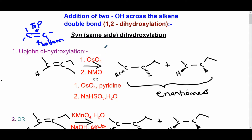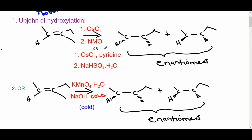There are a few reagents that can do syn dihydroxylation. The first option is osmium tetraoxide (OsO4) followed by N-methylmorpholine N-oxide (NMO) as an oxidant to regenerate OsO4 once it's used up, or OsO4 with pyridine followed by sodium hydrogen sulfite in water. The other option is potassium permanganate in water with aqueous sodium hydroxide, but it must be under cold conditions — if you use hot conditions the carbon-carbon bond will be cleaved, giving two separate compounds.